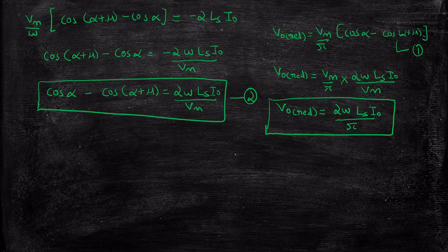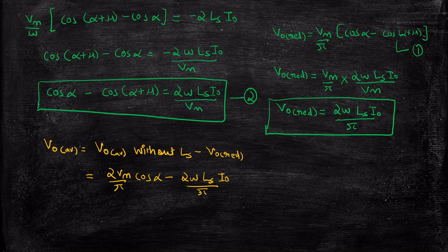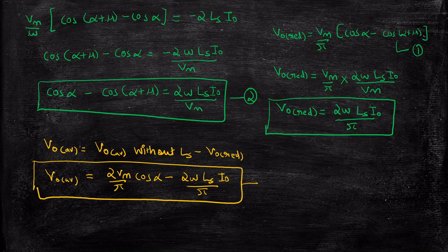Now we find the average output voltage in terms of Ls. Vout average with source inductance equals Vout average without Ls minus Vout reduced. So that is 2Vm by pi times cos(alpha) minus 2 * omega * Ls * Iout / pi. This is the average output voltage for a fully controlled rectifier with the effect of source inductance expressed in terms of Ls. There are two average output voltage expressions — one with Ls and one without Ls — and depending on the type of question, you will be able to use the appropriate one.